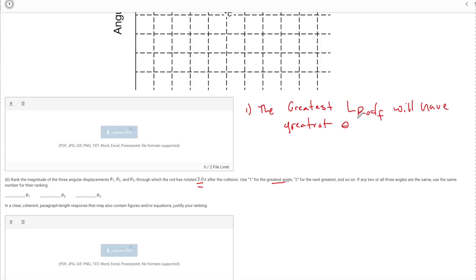I know that the greatest angular momentum for the rod final will have the greatest theta. So if I can find an expression for L rod final for each case I will be able to determine which has the greatest theta. And the movement of the puck after is going to be the thing that determines this L rod final. I'm going to set up each case and I'm going to show you how I determined the L rod final for each particular case.